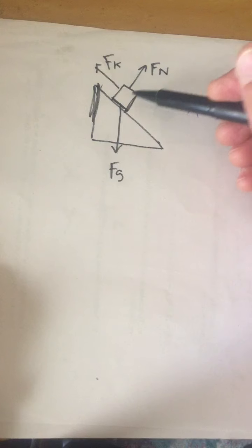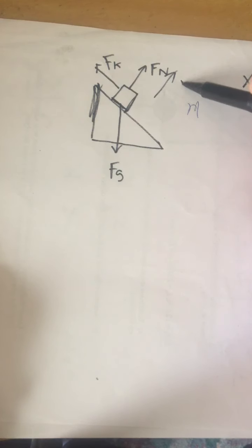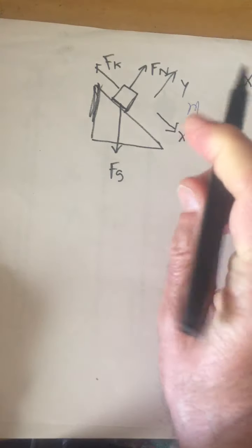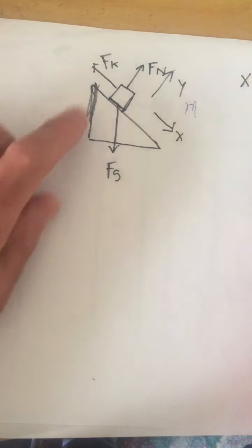In the y direction, which is perpendicular to the ramp, x is down the ramp. In the y direction in the positive direction we have Fn and the negative direction we have Fgy.